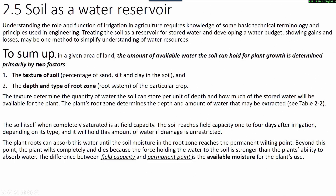The soil, when completely saturated, is at field capacity. The soil reaches field capacity one to four days after irrigation depending on its type, and it will hold this amount of water if drainage is unrestricted. The plant's roots can absorb this water until the soil moisture in the root zone reaches the permanent wilting point. Beyond this point, the plant wilts completely and dies because the force holding the water to the soil is stronger than the plant's ability to absorb water. The difference between field capacity and permanent wilting point is the available moisture for the plant's use.